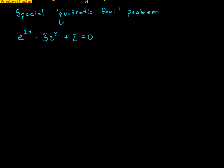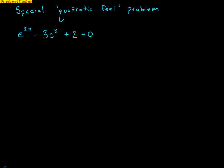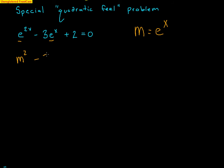Here's the last special type — a quadratic-feel problem. If I look at e^(2x) − 3e^x + 2 = 0, I see two exponential parts: e^(2x) and e^x. To solve, I use chunking. I set m = e^x. Replacing e^x with m, e^(2x) becomes m², and the equation becomes m² − 3m + 2 = 0.